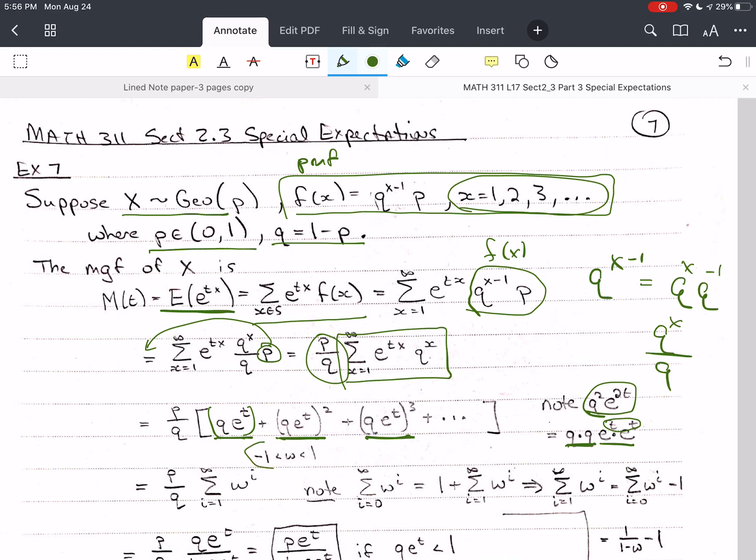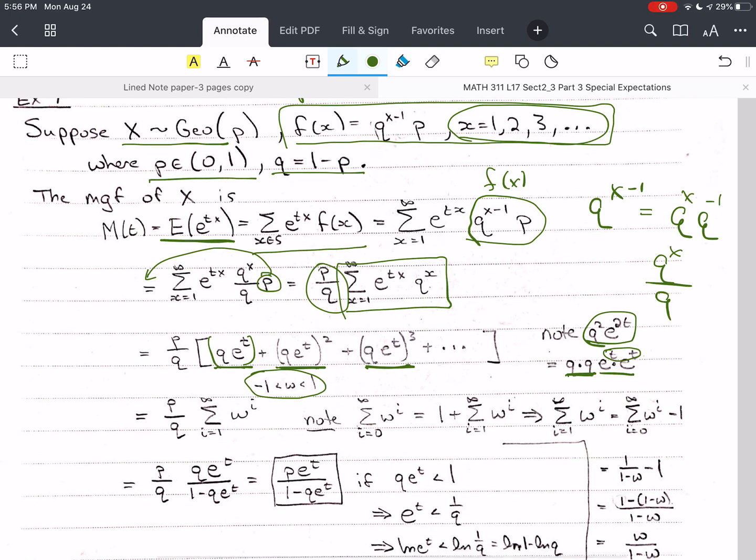Now, remember that we're going to let w be a geometric random variable. So I'm going to let w equal q e to the t. Now, if it's a geometric series, remember that w has to be between negative 1 and positive 1. q is positive. e to the t is always positive. So we have to have that w is less than 1.